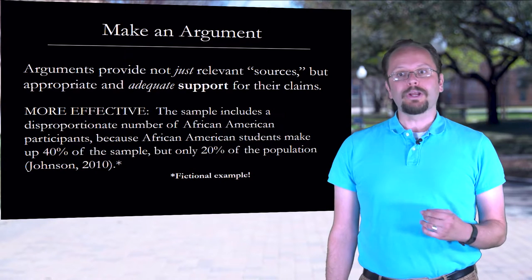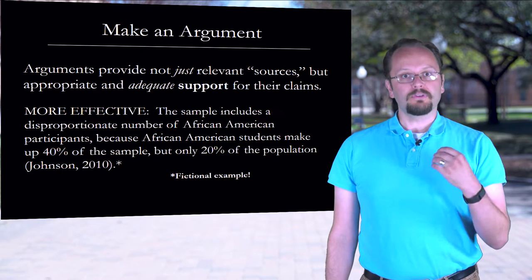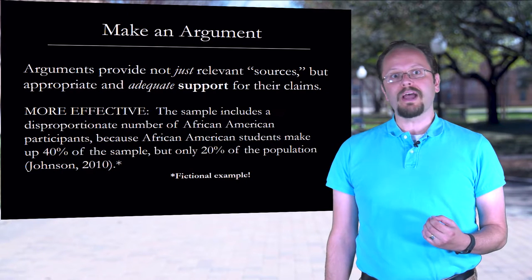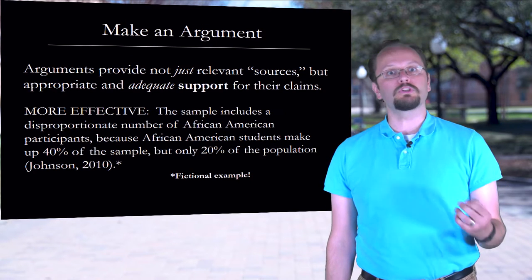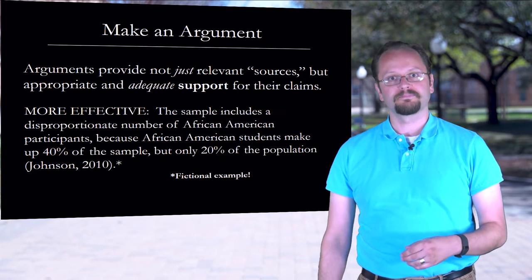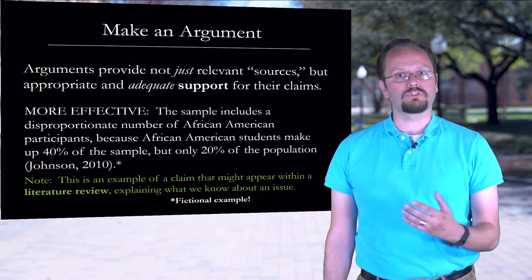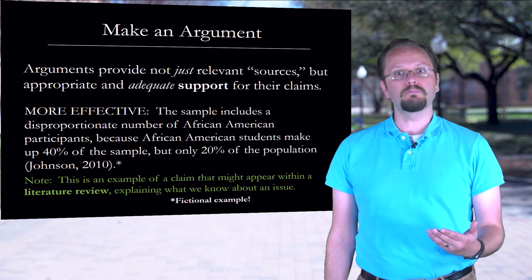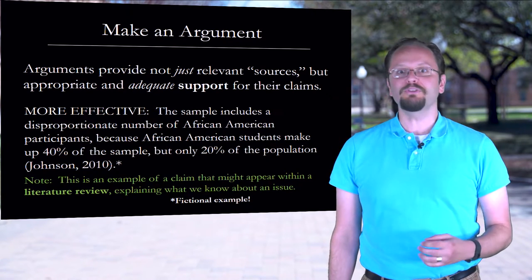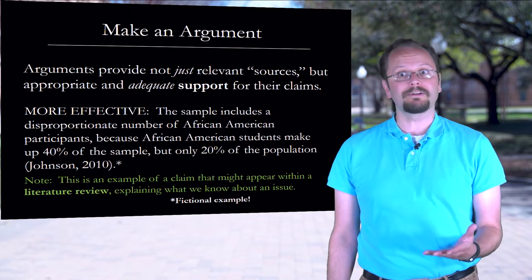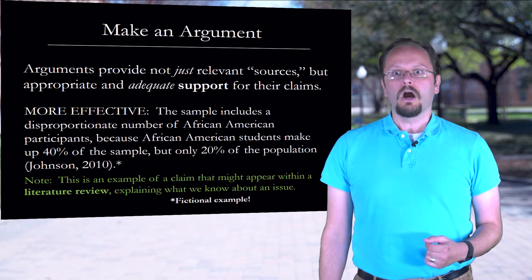So I might update our inadequate argument so that it supports the argument more effectively: 'The sample includes a disproportionate number of African American participants because African American students make up 40% of the sample but only 20% of the population.' Note that I didn't add more sources, and I didn't change the fact that a source was cited — I just provided more complete support. The argument I've constructed here is a small and simple one, but it could fit well within a larger project demonstrating what we know about an issue, but also suggesting how the available information — the knowledge base — might be incomplete.